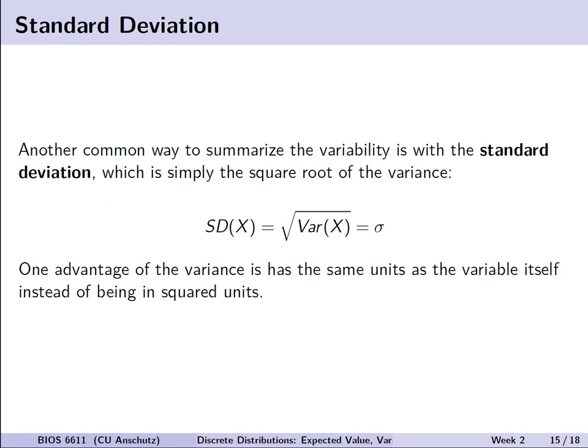Another common way to summarize variability is the standard deviation, which is simply the square root of the variance. It's frequently represented by the lowercase Greek letter sigma. The key advantage is that the standard deviation has the same units as the variable itself — if measuring height, the standard deviation is in feet rather than feet squared.